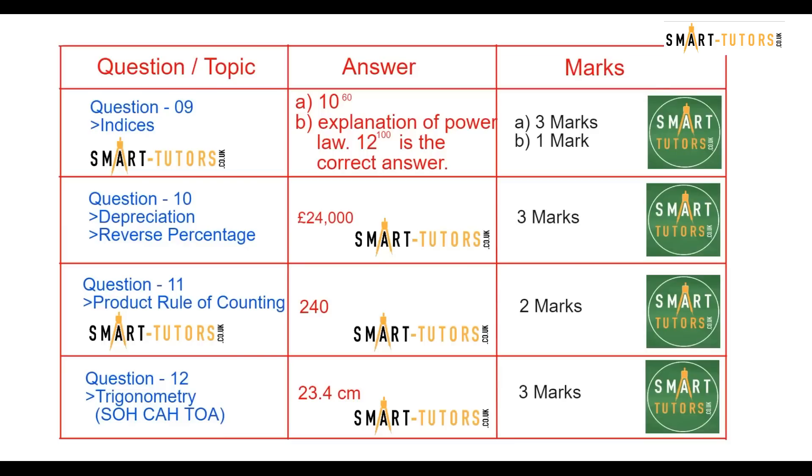Question number 11 is a product rule of counting. Answer is 240 is the correct answer. Those who watched our video yesterday, the video we published for the paper 3 revising, exactly the same question we have done. It was shirts and jeans. How many different combinations? But this question was shirts, jeans and the jacket. So the concept is same.